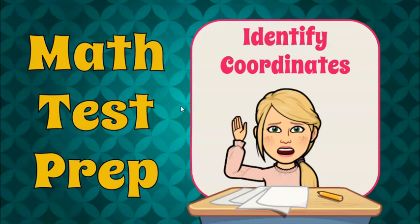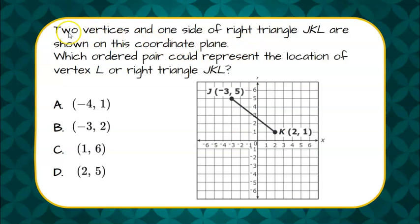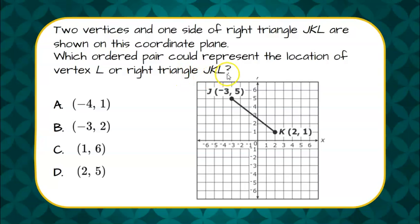Hi, welcome to Math Test Prep, where today we're going to answer a standardized math test question where we are asked to identify coordinates. We are given two vertices and one side of a right triangle, JKL, are shown on this coordinate plane. Which ordered pair could represent the location of vertex L of right triangle JKL?